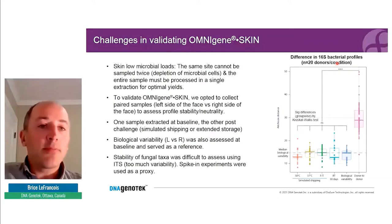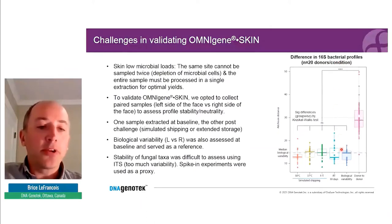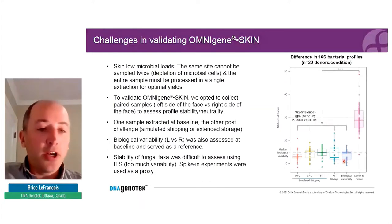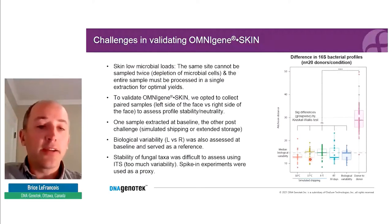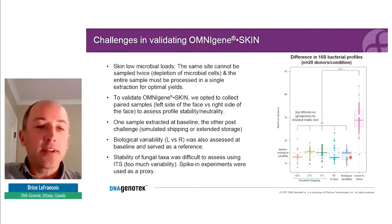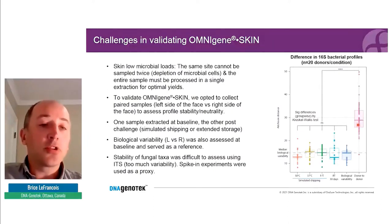Biological variability had to be assessed since we're collecting from left and right sides of the same person's face. We generated 16S bacterial profiles using V3/V4 primers with 20 donors per condition. When looking at biological variability at baseline on the Bray-Curtis dissimilarity scale, it's very low. Importantly, extended storage at room temperature for 30 days, multiple freeze-thaw cycles, or incubation at elevated temperature did not increase biological variability — meaning profiles were stable. As a reference, donor-to-donor differences measured about 30 units on the Bray-Curtis scale — much higher — showing we're capturing the uniqueness of each donor's profile.